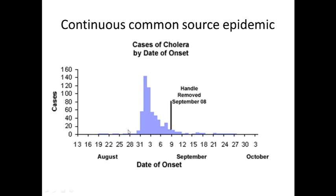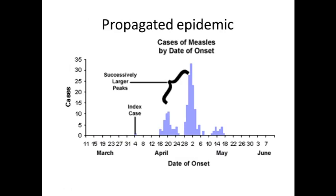However, in this condition all the cases have not occurred within a single incubation period, which means there is an ongoing source of contamination that has been going on for a long period of time. The down slope of the curve is very sharp because the pump handle was removed on September 8th, causing a sudden decrease in the number of cases, though contamination still continued.